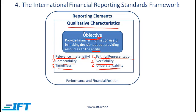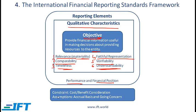Surrounding the qualitative characteristics are the reporting elements. We have performance-related reporting elements such as revenue and expenses, and financial position-related elements such as assets, liabilities, and equity. You also need to recognize the constraints and assumptions associated with the framework. A classic constraint is the cost-benefit consideration — there has to be an appropriate balance between the cost of financial reporting and the benefit associated with it.